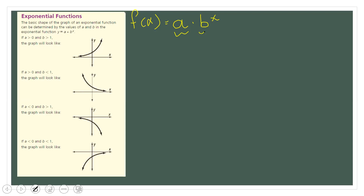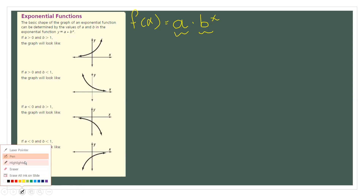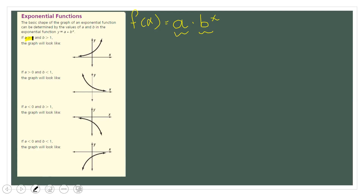For this type of function, let's talk about the basic shapes. If a is greater than zero and B is greater than one, the basic shape will curve upward like this. Here a is positive and B is greater than one.